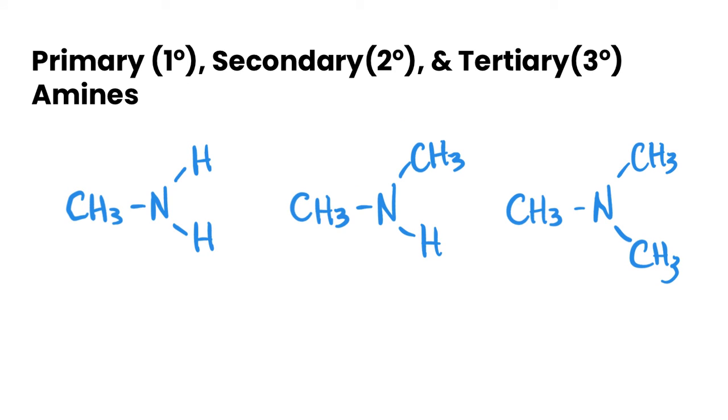Now amines are a little bit different because it's centering around the nitrogen, and nitrogen only forms three bonds. We've got a nitrogen here, and what we're doing is we're looking at everything that's attached to that nitrogen. Let's highlight the alkyl groups here in all three molecules, and we'll also highlight the hydrogens.